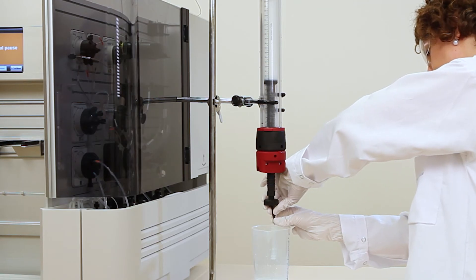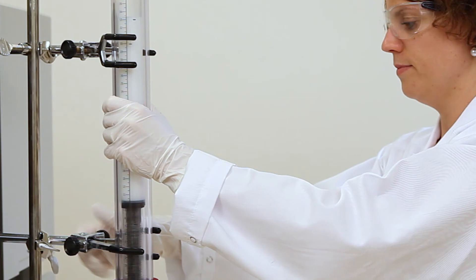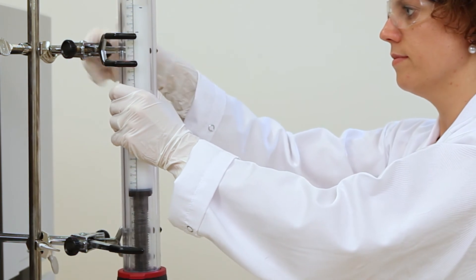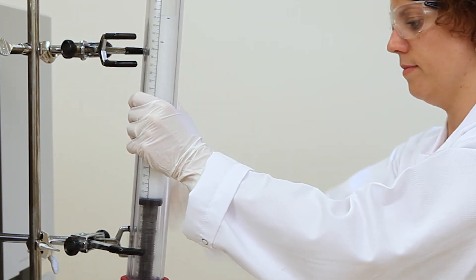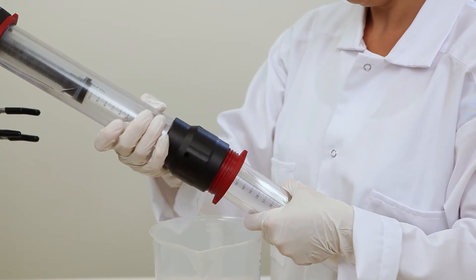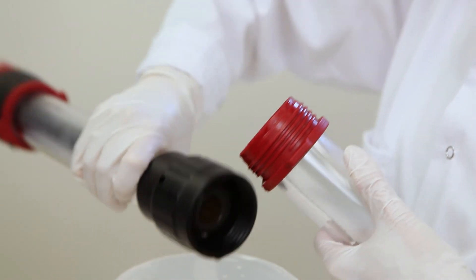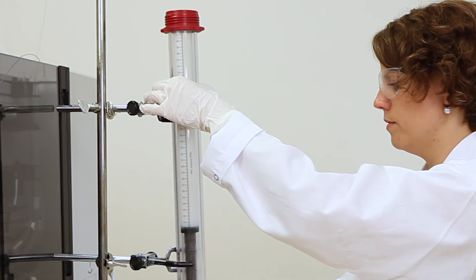Stop the pump and put a stop plug on the outlet of the column. Disconnect the column from the system. Detach the packing tube from the column over a beaker or a sink. Mount the column back on the stand.